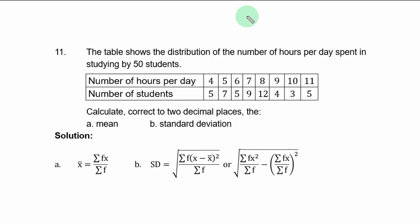So you have number of hours per day. Number of students is the frequency. So you can take number of hours per day as x. So you have 4 to 11 for the frequency. It means 5 students studied 4 hours per day.